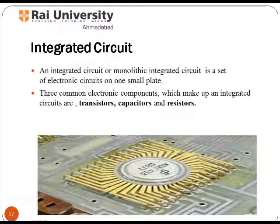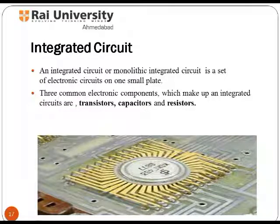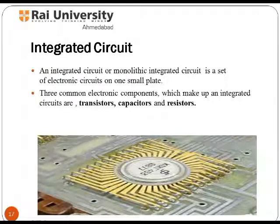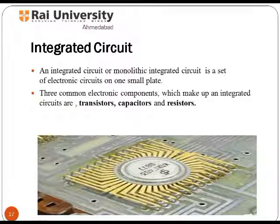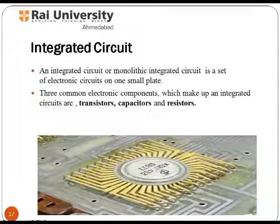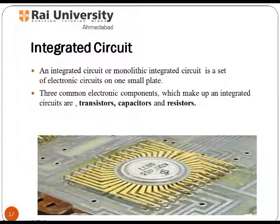Digital ICs operate at only a few defined levels or states rather than over a continuous range of signal amplitudes. These devices are used in computers and laptops, their networks, and in modems. The fundamental building block of digital ICs are logic gates, which work with binary data that have only two different states called logic 0 and logic 1.